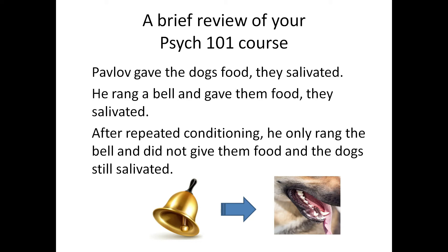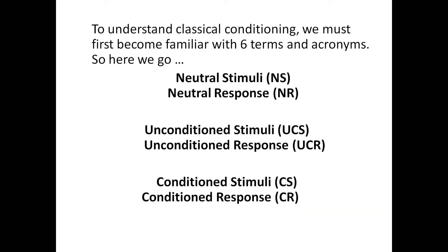A brief review of your Psych 101 course: Pavlov gave the dogs food, they salivated. He rang a bell and gave them food, they salivated. After repeated conditioning, he only rang the bell and didn't give them food, and the dogs still salivated. To understand classical conditioning, we must first become familiar with six terms and acronyms.